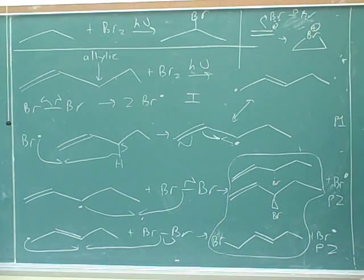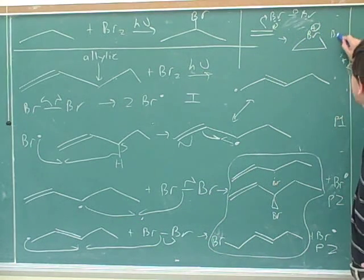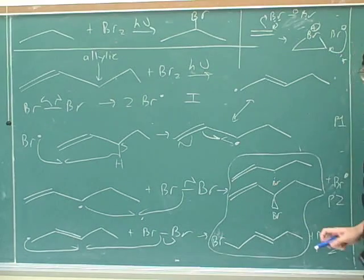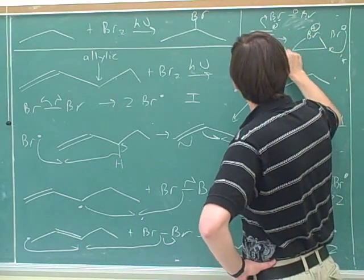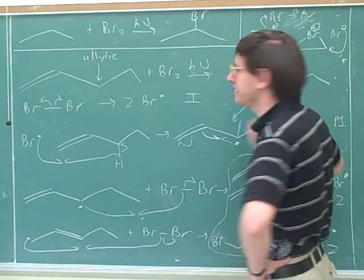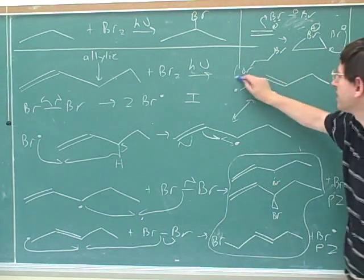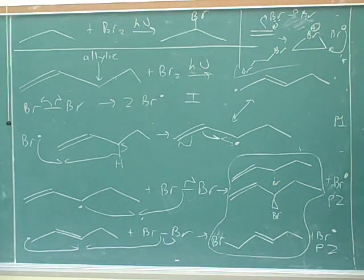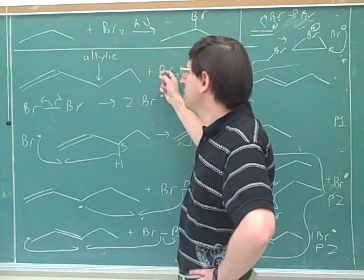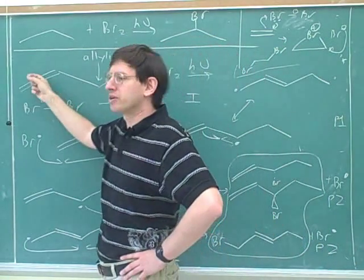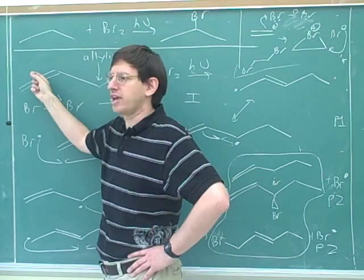Where we get this bromonium ion to start with, and then we have an anti-attack like this. And then you would end up with a bromine on both sides, like this. Okay, well then we have a problem. How do we know that this bromine isn't just going to do that normal halogenation reaction?